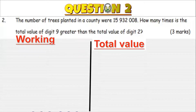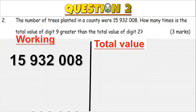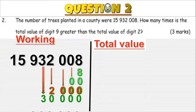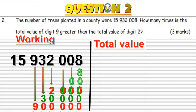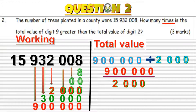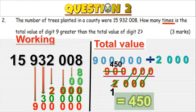Working: in 15,902,008 — the total value of digit 8 is 8, then zeros, then 2,000 (two thousand), then 30,000 (thirty thousand), then 900,000 (nine hundred thousand). How many times is the total value of digit 9 greater than digit 2? This requires division: 900,000 divided by 2,000. Simplifying: 900,000 over 2,000 gives 450. Wait — simplifying zeros and dividing by 2 gives 450. The correct answer is 450.